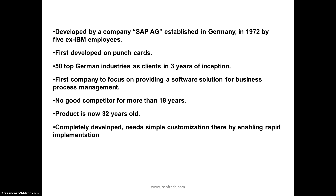SAP was developed by a company called SAP AG, established in Germany in 1972 by five ex-IBM employees. Initially they used punch cards — there was no software. Then 50 top German companies became clients in the first three years, after which SAP entered the global market. It was the first company to focus on providing a software solution for business process management, and it is completely developed today with simple customization enabling rapid implementation.